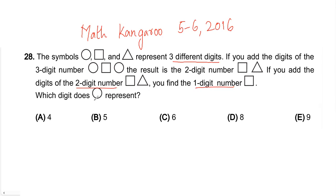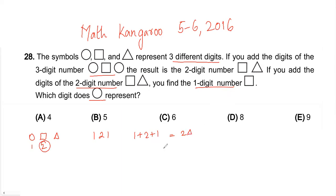If you add the digits of that two-digit number, you get the one-digit number which is square. So which digit does the circle represent? For example, suppose the circle is one, so the number is one-two-one. When you add one plus two plus one, you should get square-triangle, and when you add those digits you should get the square.